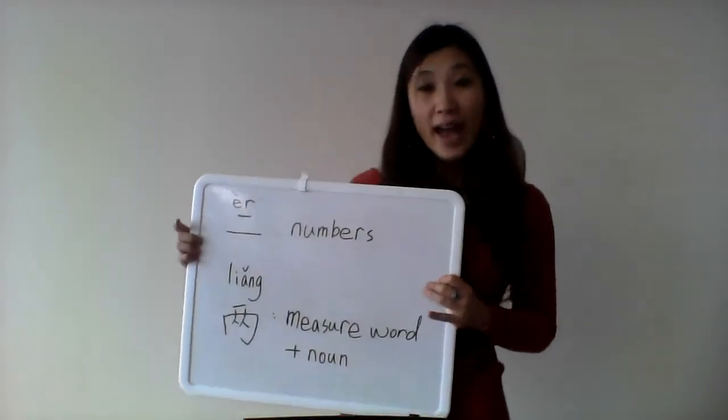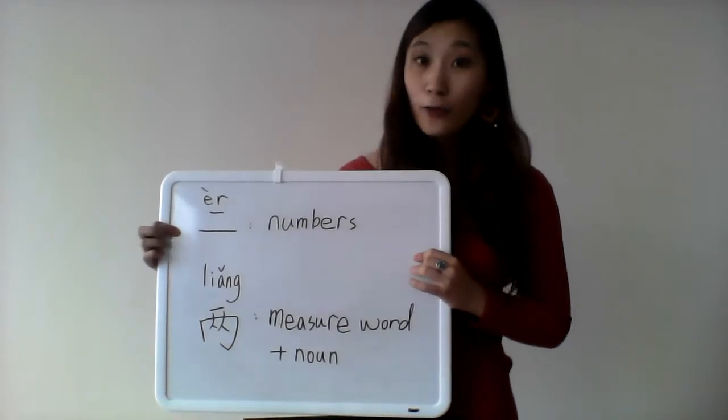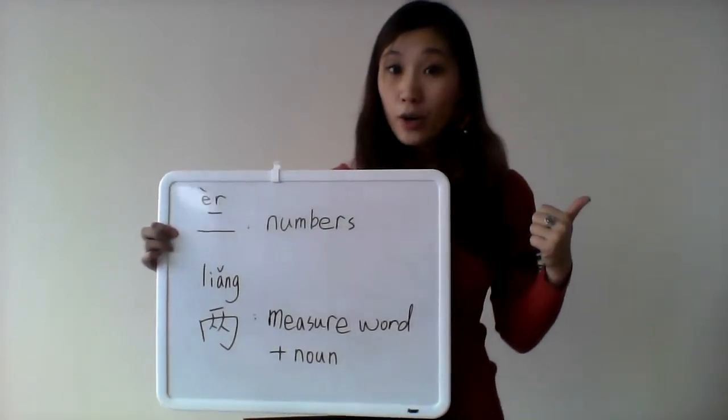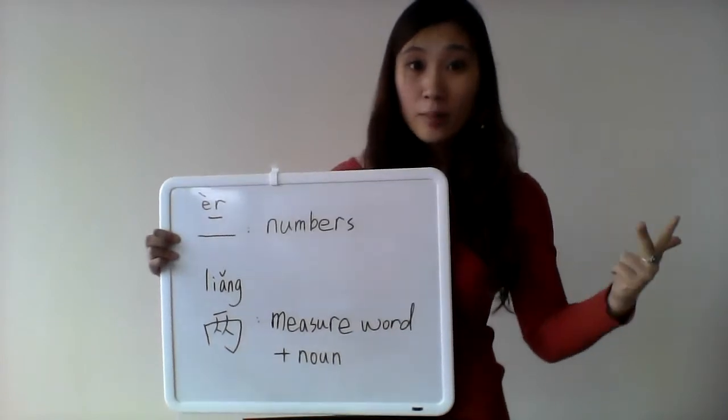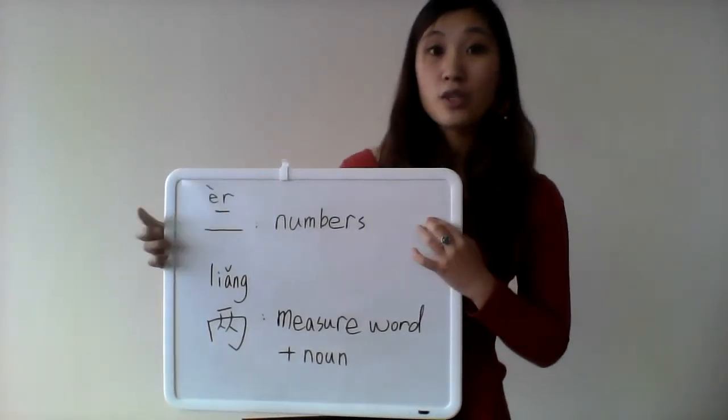So, when you are actually talking about numbers, you use èr. For example, your telephone number, your room number, your credit card number, or when you count 1, 2, 3, 4, 5, you use èr.